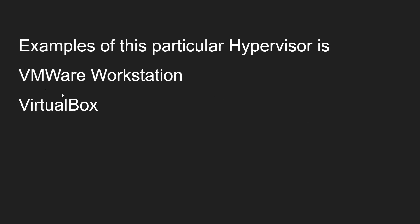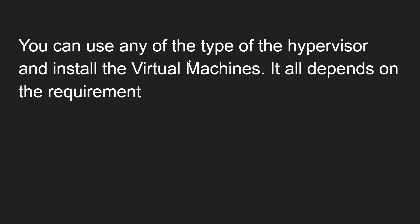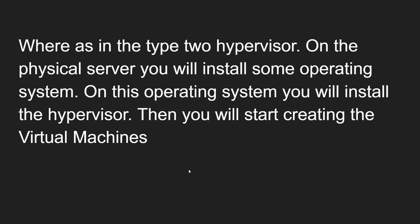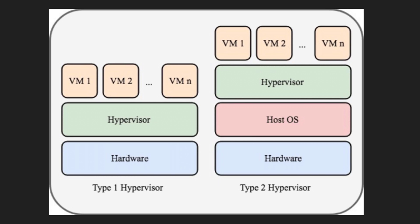Examples of Type 2 hypervisors are VMware Workstation and Oracle VirtualBox — which we are already using. That is called a software hypervisor because it can only be installed if an operating system is present. You can use either type of hypervisor depending on the requirement. Generally in production we use Type 1, whereas for R&D or development purposes we use Type 2 hypervisor. Hope you understood the hypervisor concept — please post comments below, and if you like this video please subscribe to my channel.